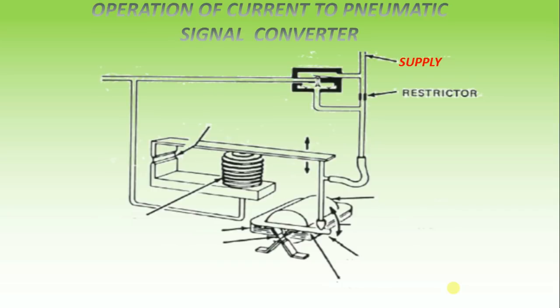Do you know how a current to pneumatic signal converter operates? A DC milliamps input signal is converted to a proportional pneumatic output signal by this following way.